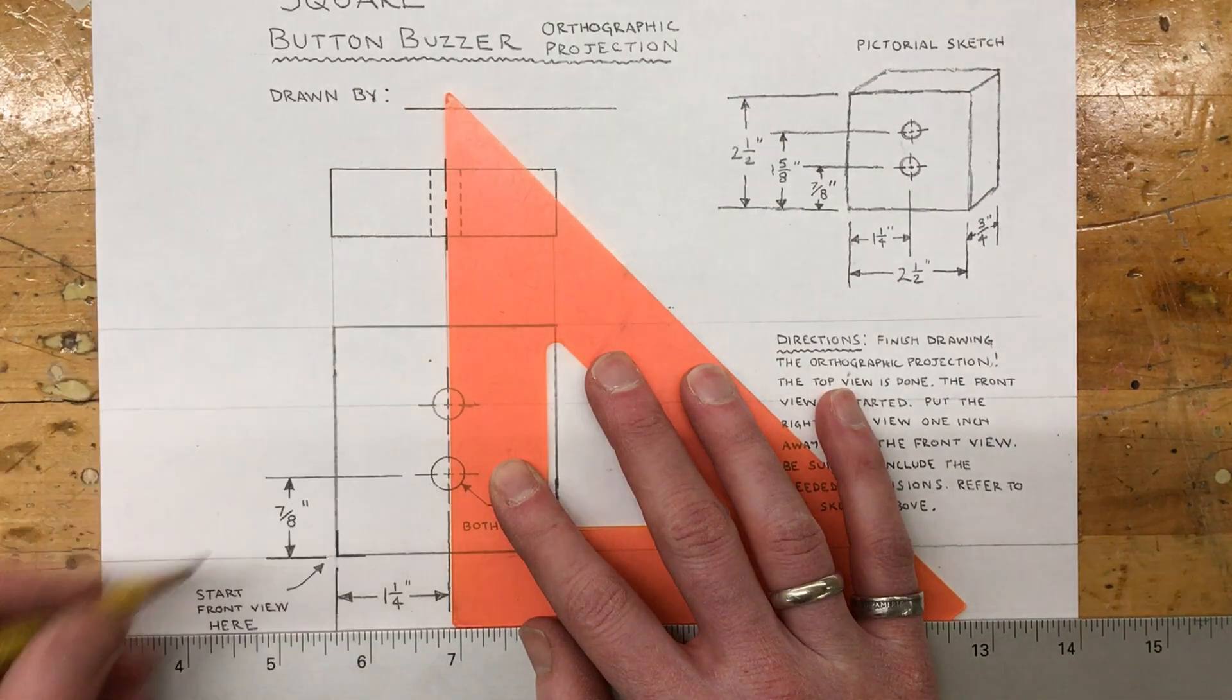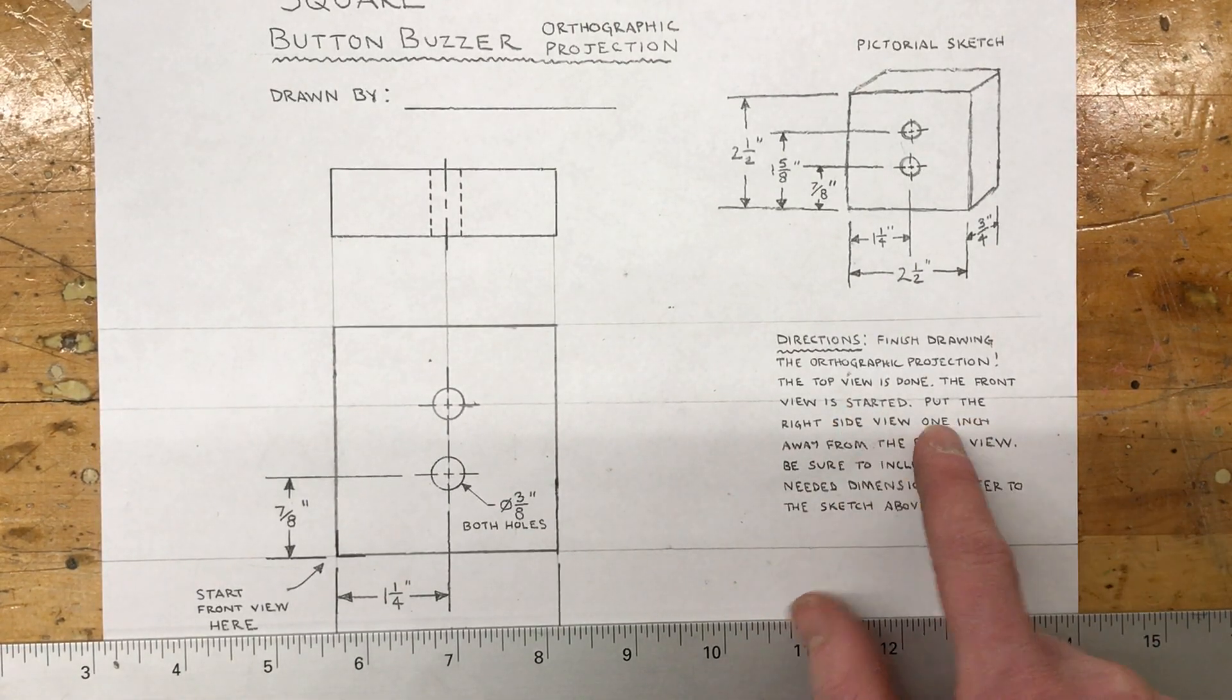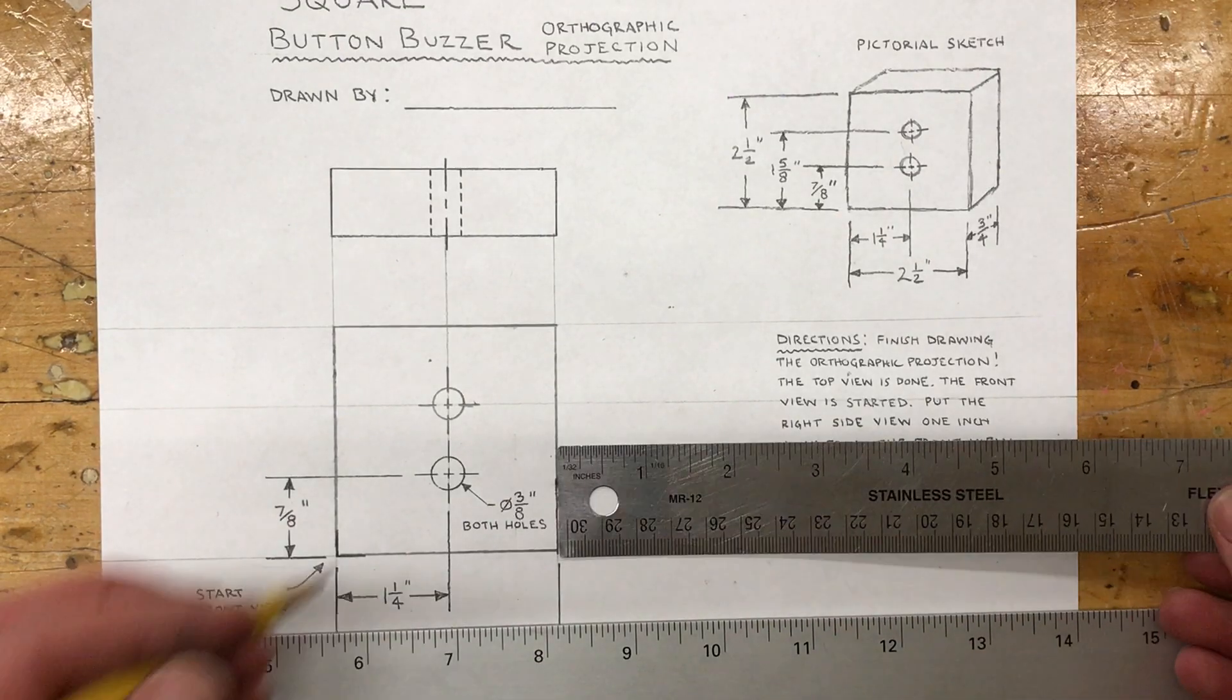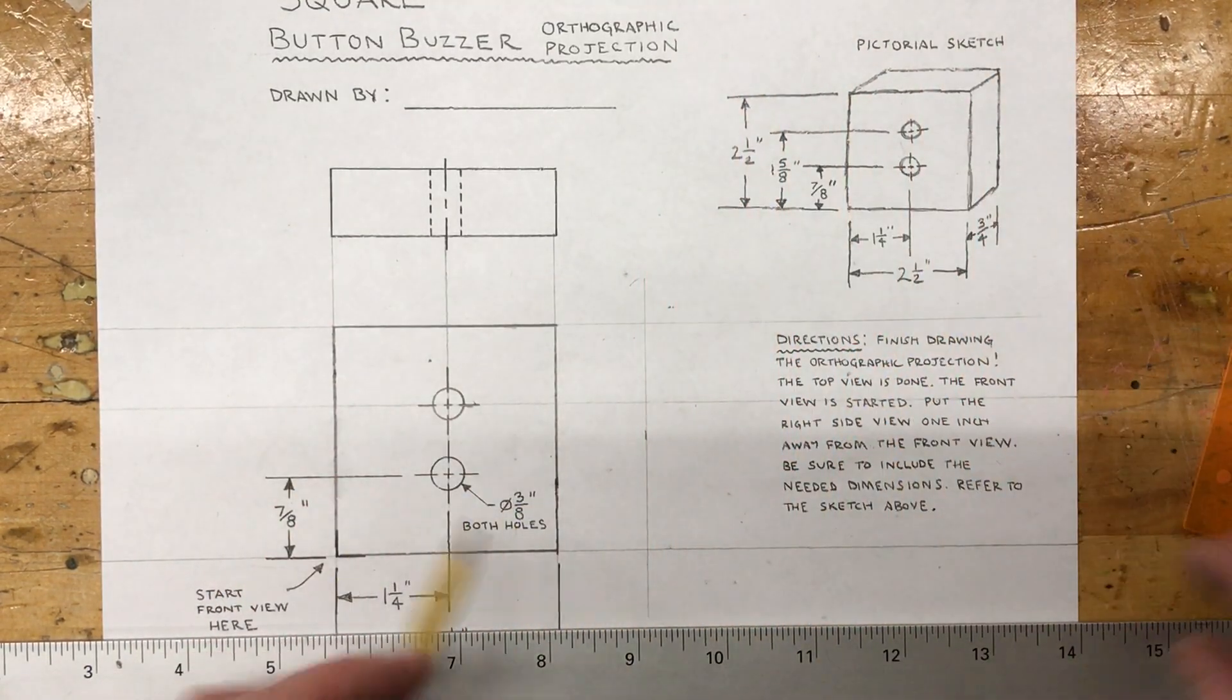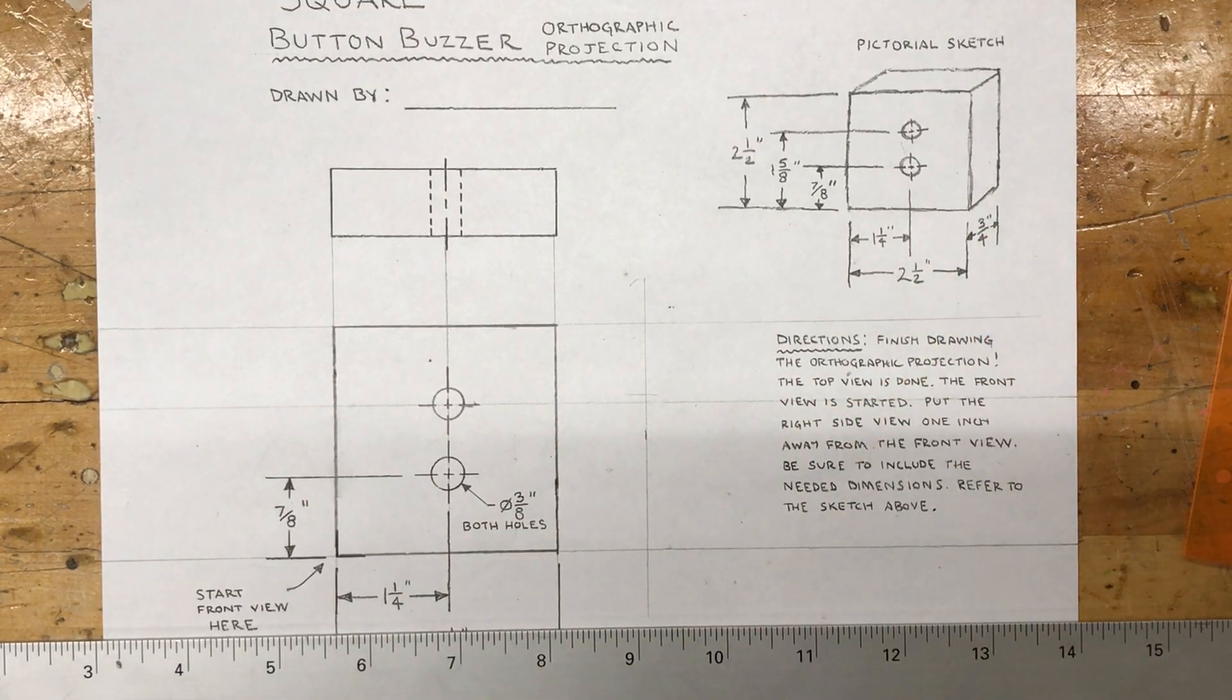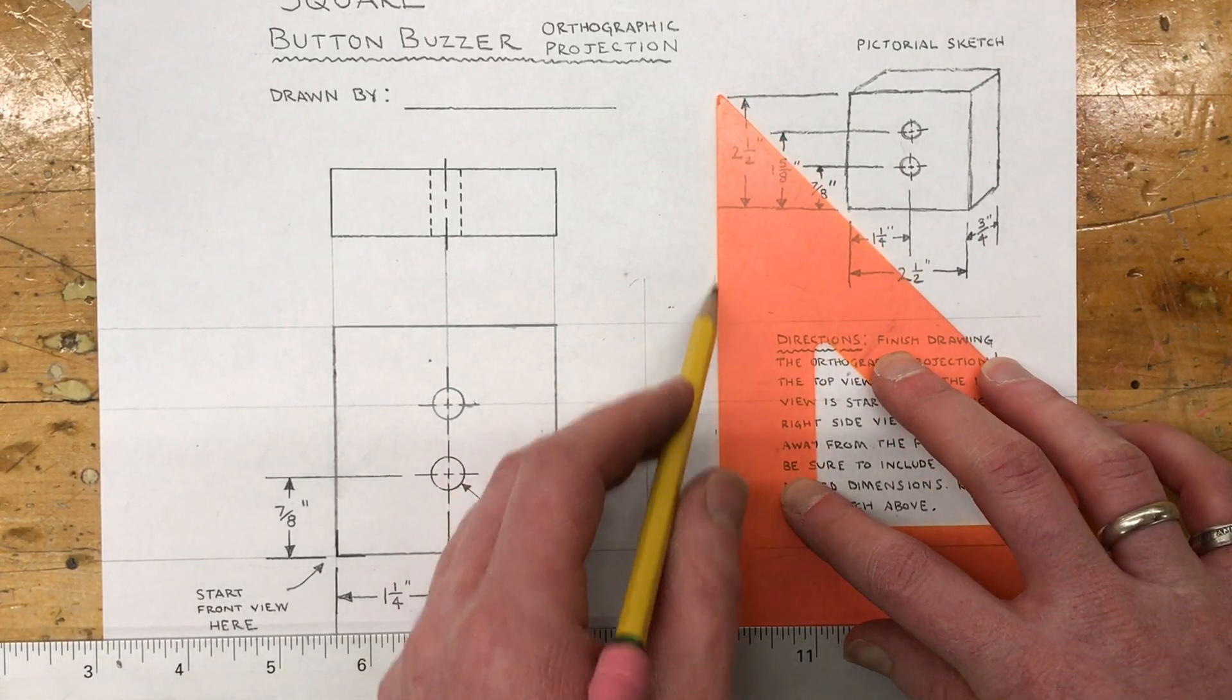Let's see what else do I need to do - the right side view. So the instructions say the right side view should be one inch away from the front view, so I will measure one inch away, mark, make a line. The thickness of it from front to back is three-fourths of an inch, so I'll measure over three-fourths of an inch, put a mark, make a line.